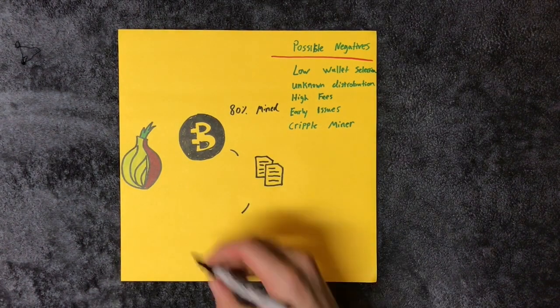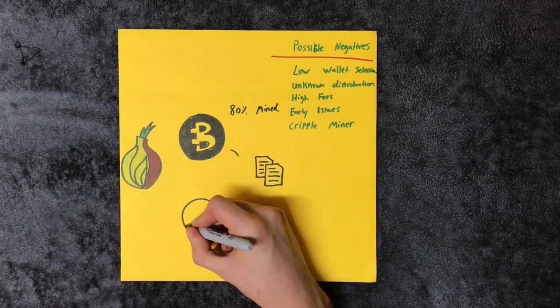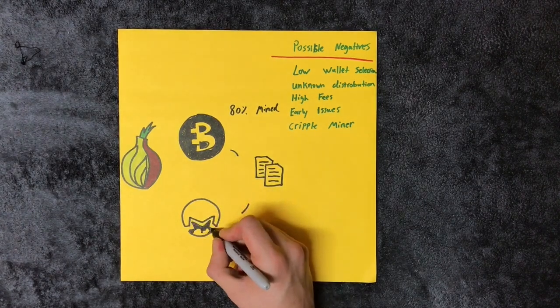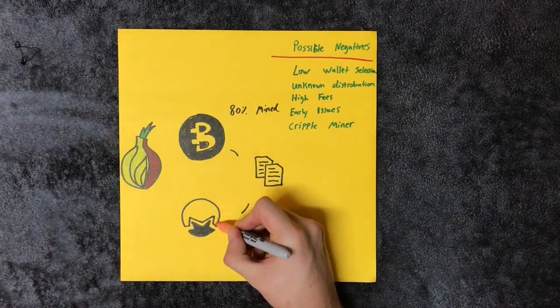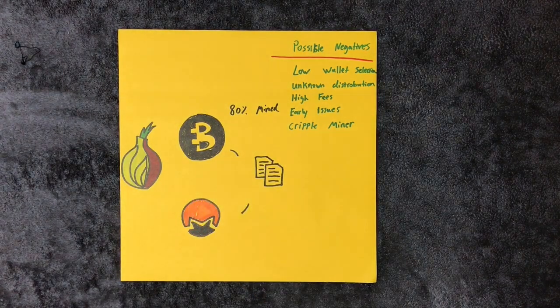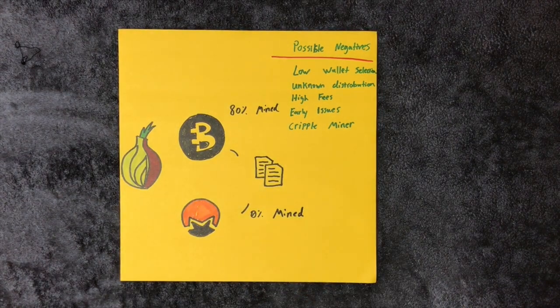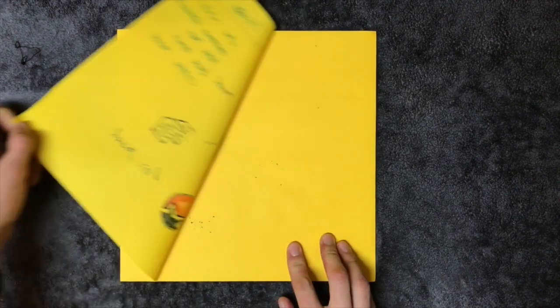This community called their new coin BitMonero. An individual whose username was Thankful for Today led the project. He wasn't viewed as a skilled leader. He ignored the community repeatedly, dropped in and out of the project for long amounts of time.